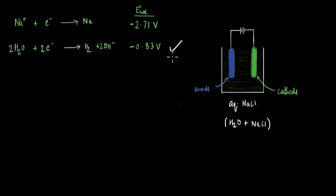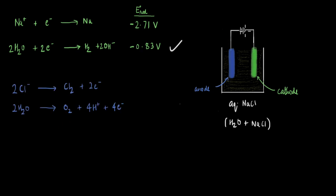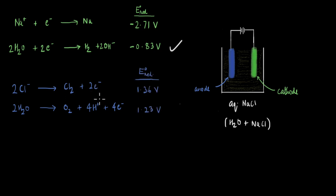Now let's look at the reaction at the anode. The anode is connected to the positive terminal and will attract the chlorine ions, so one possible reaction is that chlorine ions come together to form chlorine gas. But just like before, water can also get oxidized here — another possible reaction is water getting oxidized to give oxygen and H⁺ ions. If we think of these as competing reactions and go back to our reduction potentials: for oxidation reactions, a higher reduction potential means a higher tendency to get reduced, or a lower tendency to get oxidized. So thermodynamics tells us the species with the lower reduction potential will be oxidized.